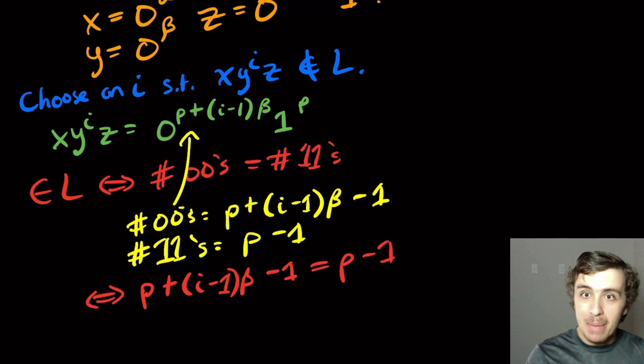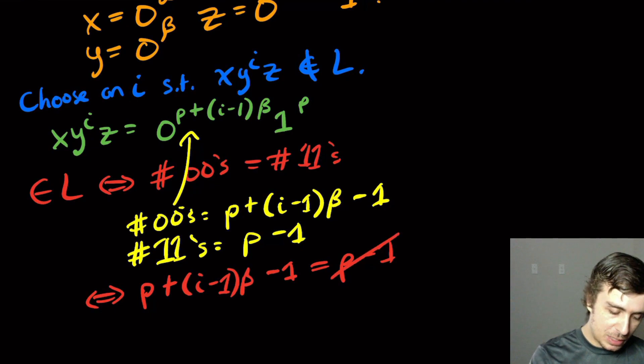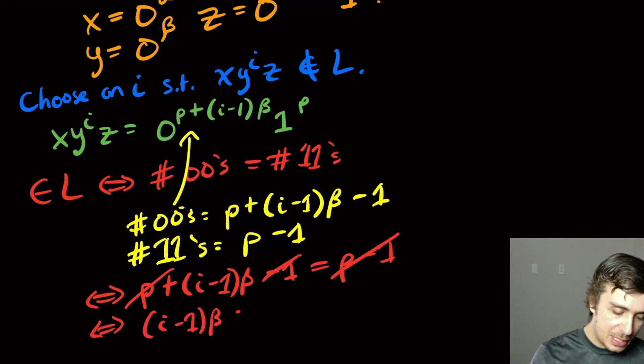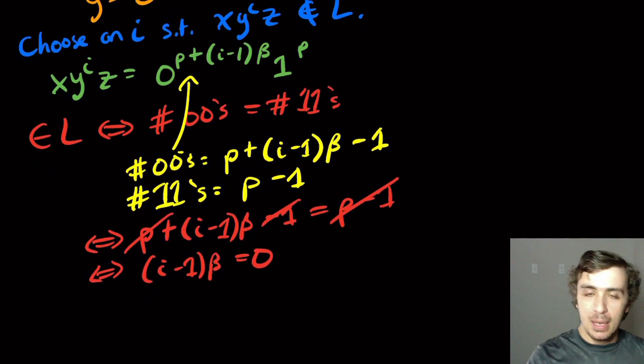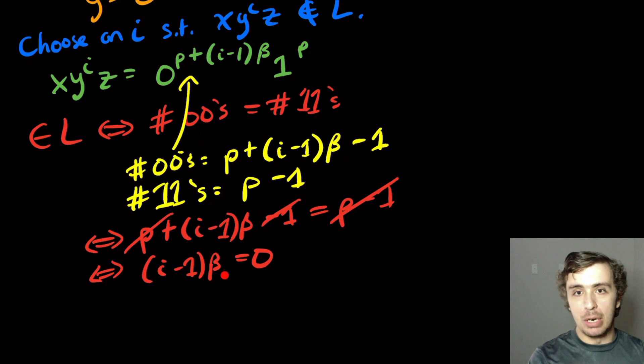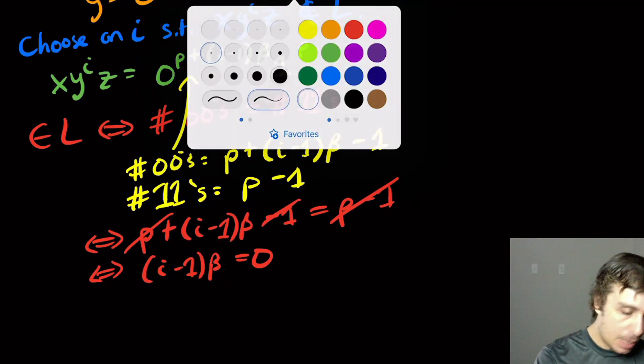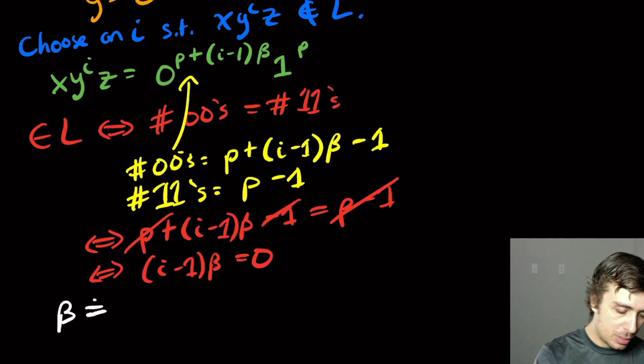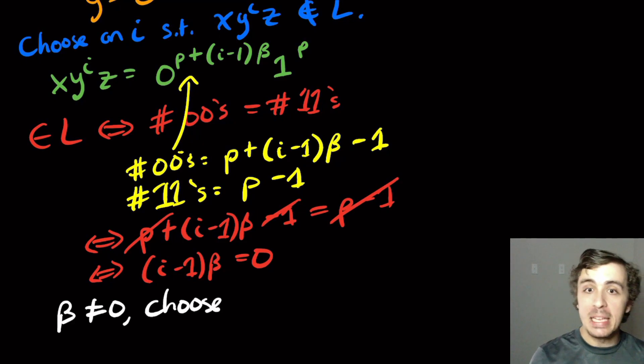We see P-1 on both sides, so let's kill those off. This is if and only if (i-1)β = 0. That would imply that either i = 1 or β = 0. Beta is not zero by definition. So let's choose some value of i that's not one. Let's pick two.